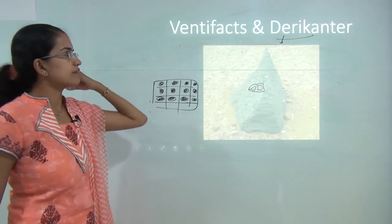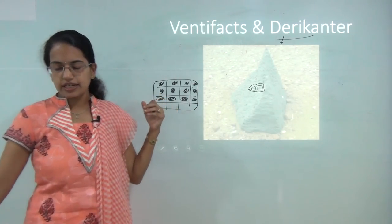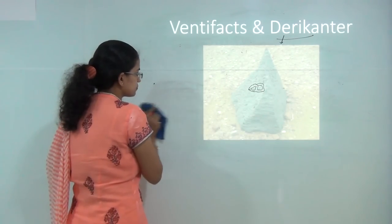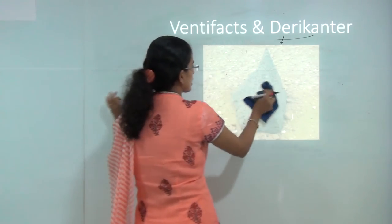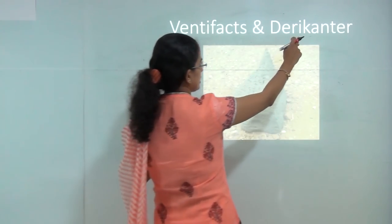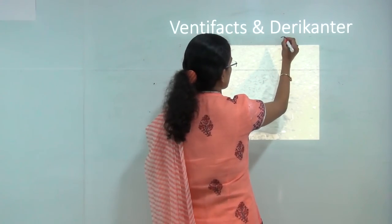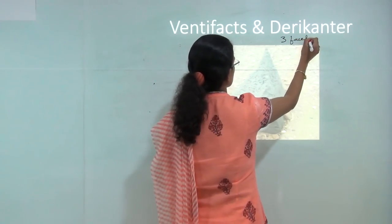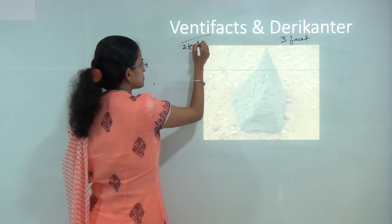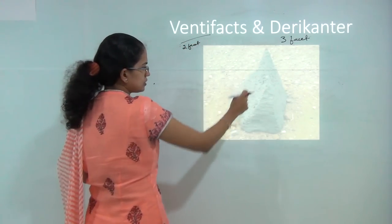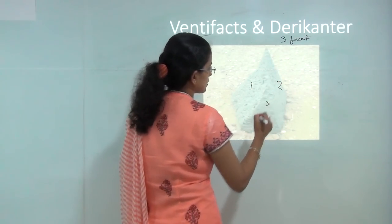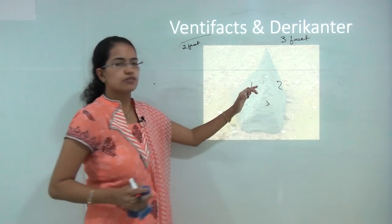The next is ventifacts and dreikanter. These are rocks that remain in the desert region after wind erosion has taken place. A dreikanter is a three-faceted rock while a ventifact is a two-faceted rock. As seen in the image of a dreikanter, you can count one, two, and three faces on the rock.